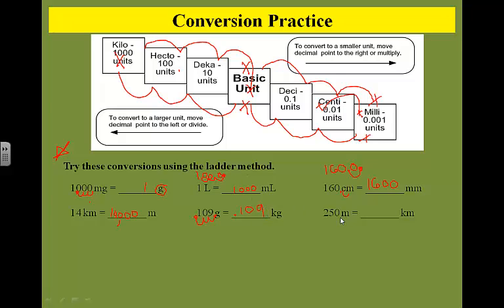Last one. 250 meters to kilometers. Again, I've got meters going up to kilometers. That is going to be 1, 2, 3 steps up. So that means I move it over that decimal to the left three places. 1, 2, 3, and I've got 0.25, we can drop in a 0, it doesn't really matter either way, kilometers.